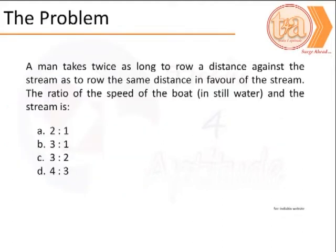Let us begin by reading the problem. A man takes twice as long to row a distance against a stream as to row the same distance in favor of the stream.